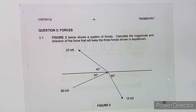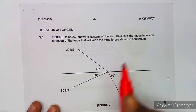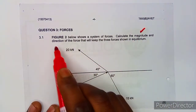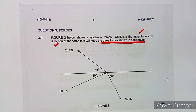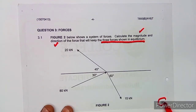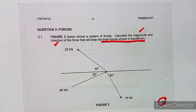From the question given, Figure 2 below shows a system of forces. We need to calculate the magnitude and direction of the force that will keep the three forces shown in equilibrium. So we need the magnitude and the direction that will keep these three forces in equilibrium — meaning we are talking about the resultant — and we've got nine marks for that.